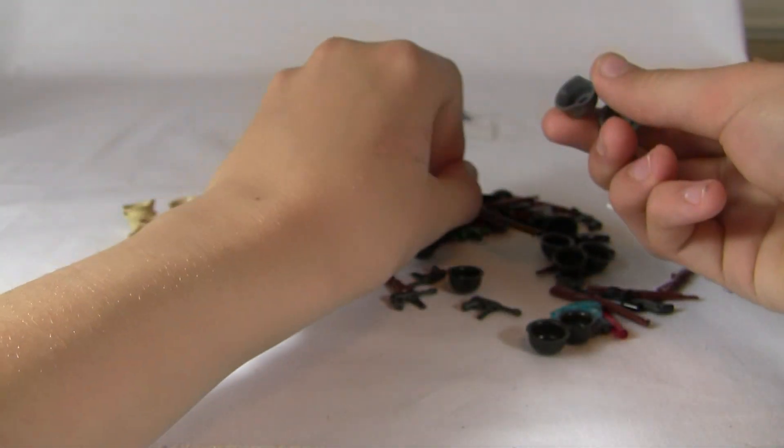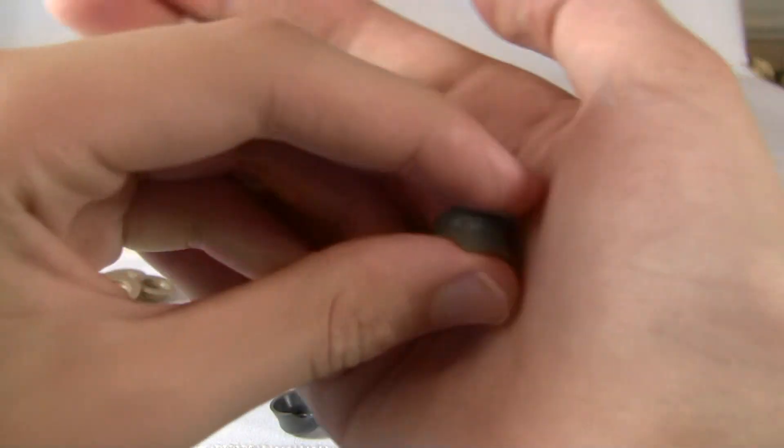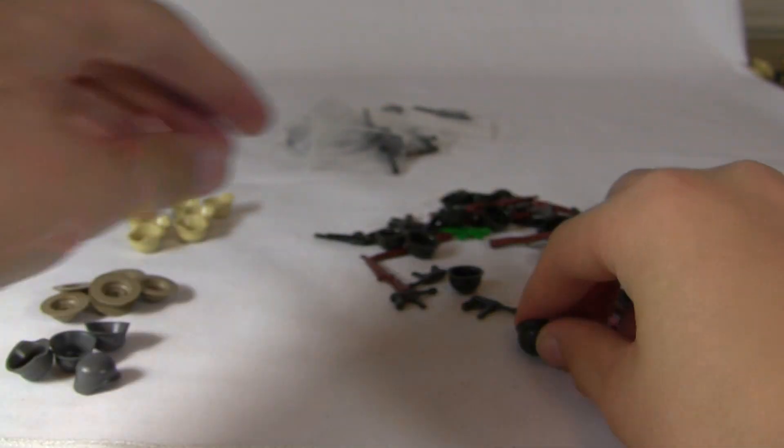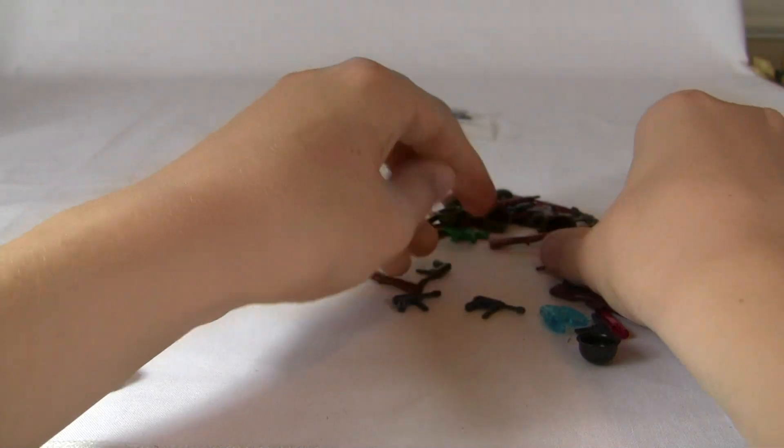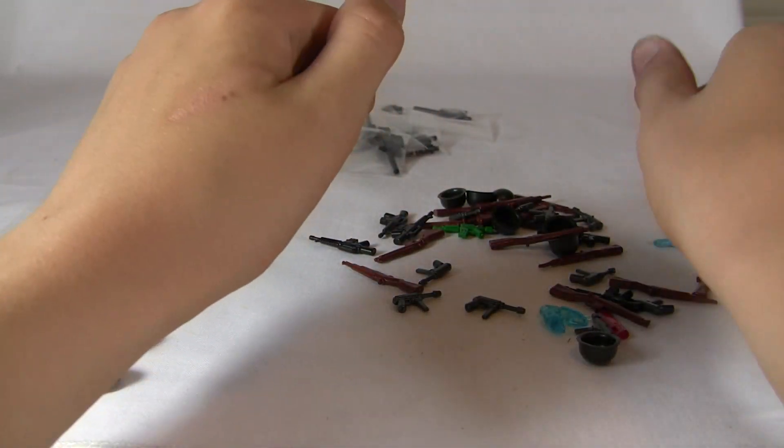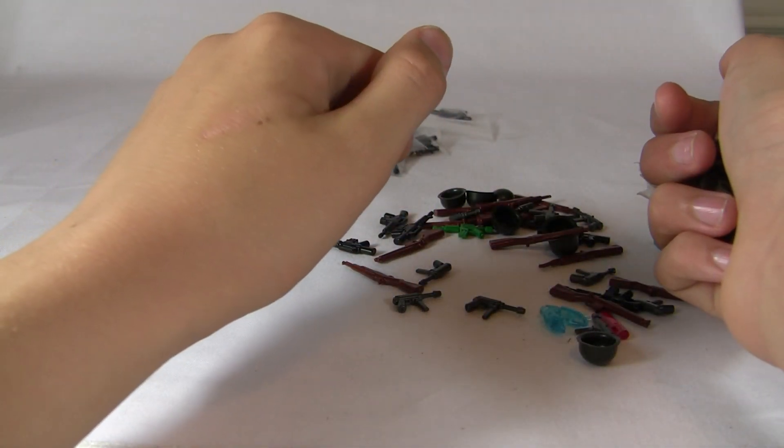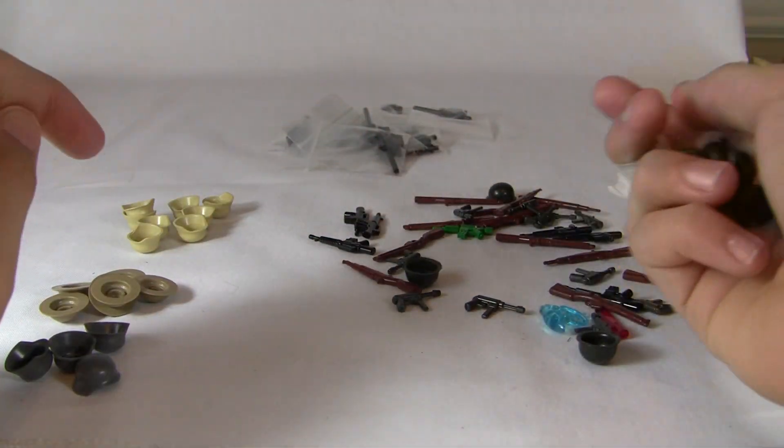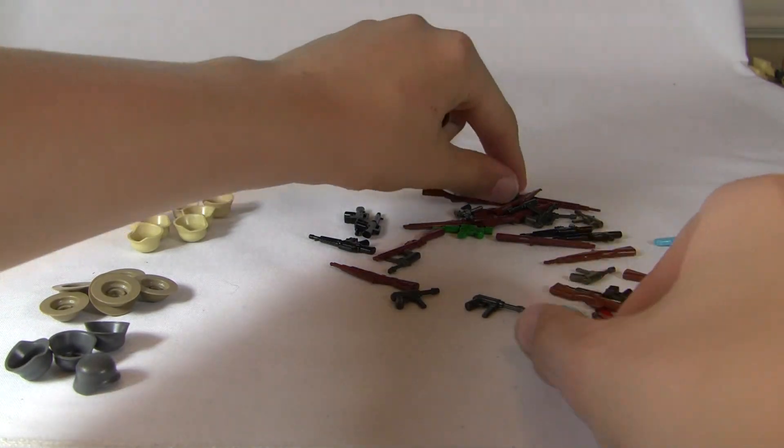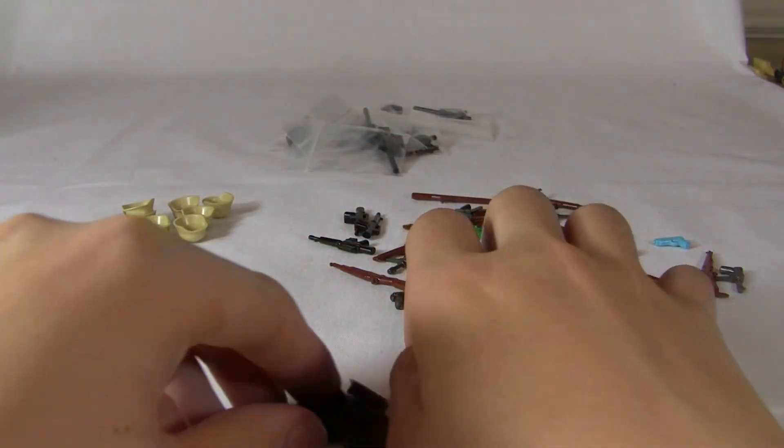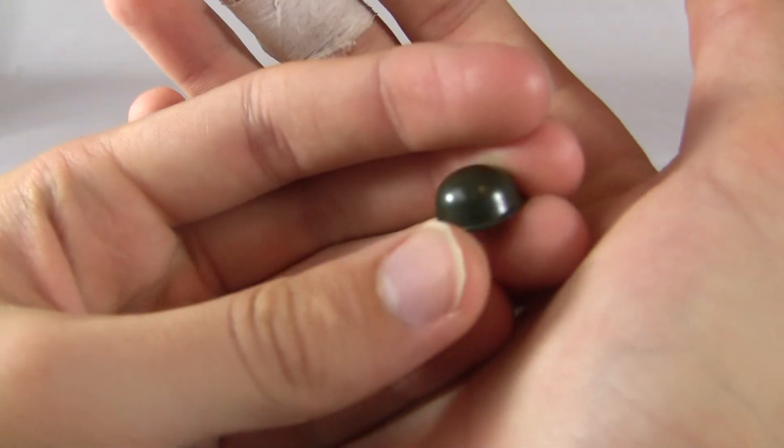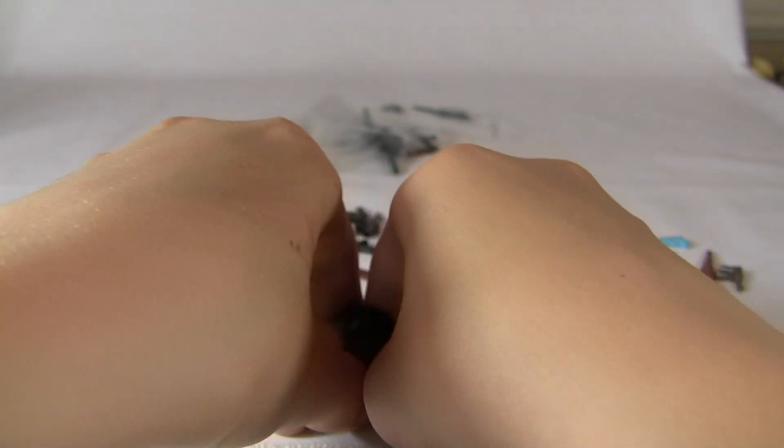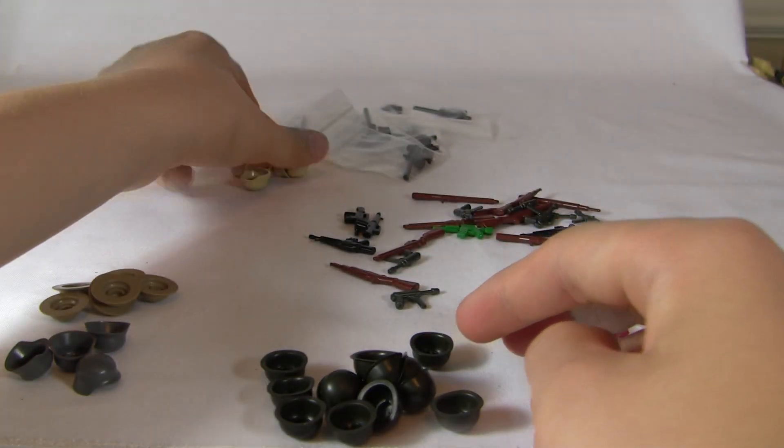And we got 4 dark gray stahlhelms. And then we got 14 M1 helmets. So these ones are for obviously the British, or the Brody's are for British soldiers. The stahlhelms are for Germans. And these are for some Vietnam and Americans. So those are in OD Green. Got 14 of those.